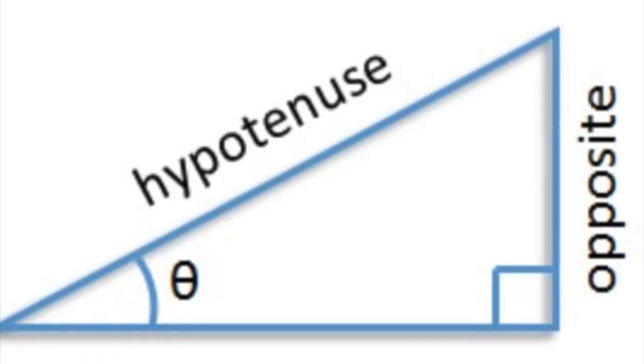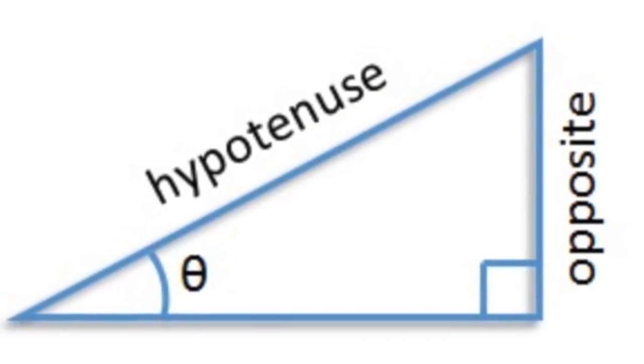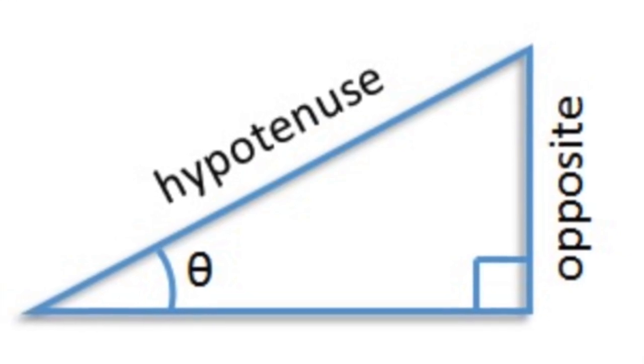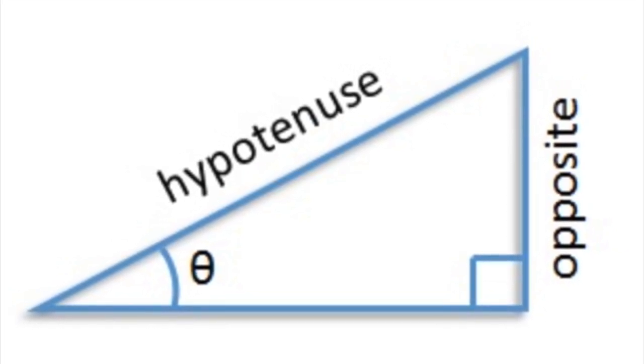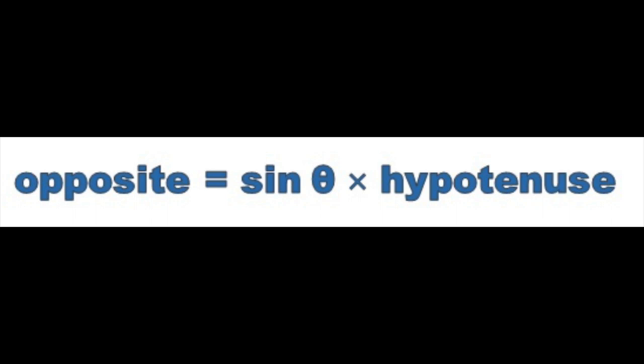You can solve for the opposite side or height by simply cross multiplying and reordering the formula so that opposite equals sine of the angle times the hypotenuse.